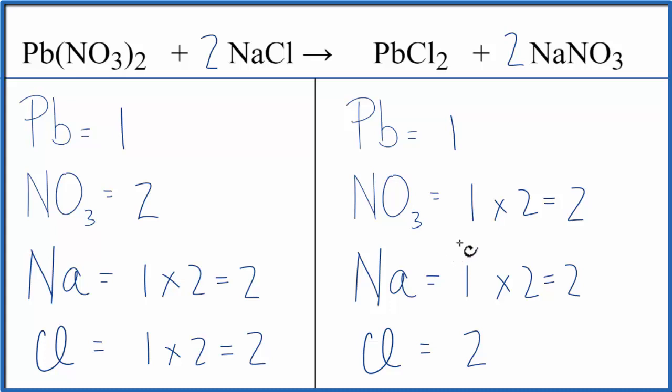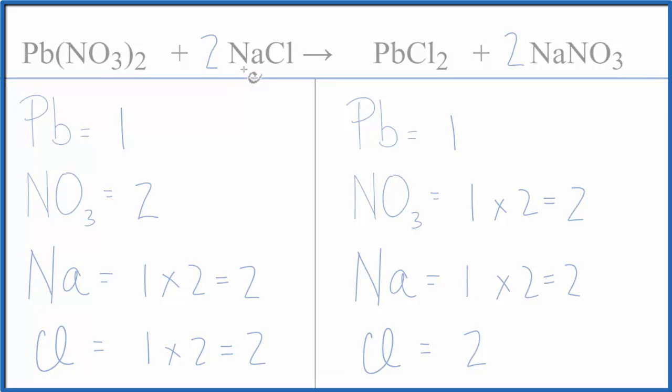This equation is balanced. For the nitrate group, since it stays together, we have a nitrate group here, and here. We can count that as 1 item, and then you can see that that makes the balancing a lot easier. This is Dr. B with the balanced equation for Pb(NO₃)₂ plus NaCl. Thanks for watching.